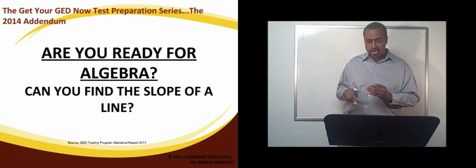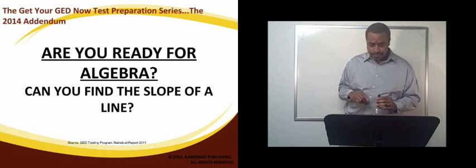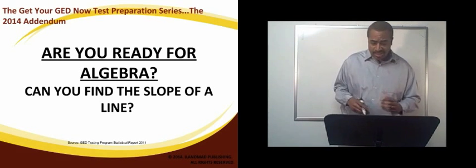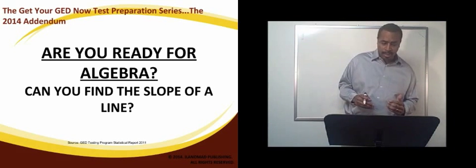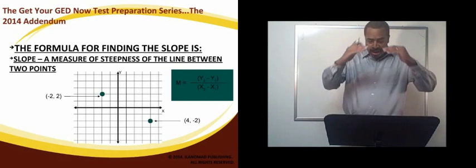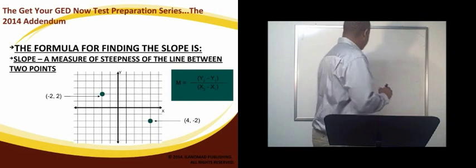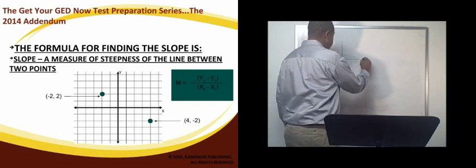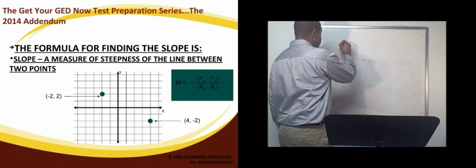Can you find the slope of a line? We're going to talk about the formula for finding the slope of a line, and the slope is simply a measure of the steepness of a line between two points. This is the x-axis, this is the y-axis.